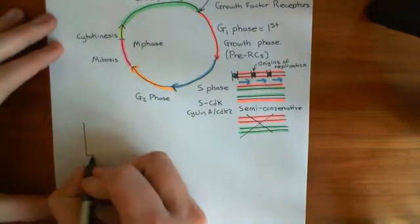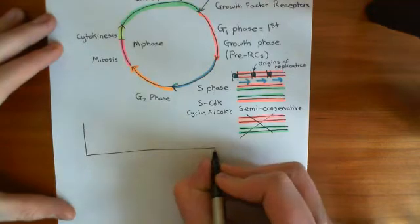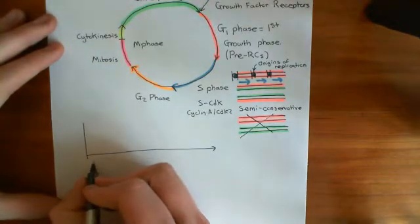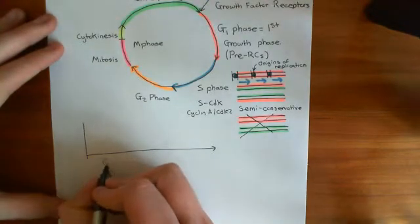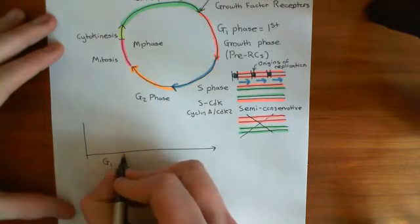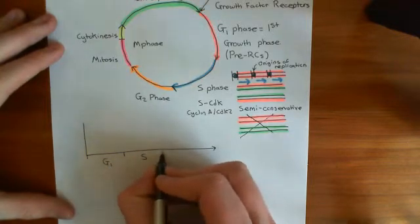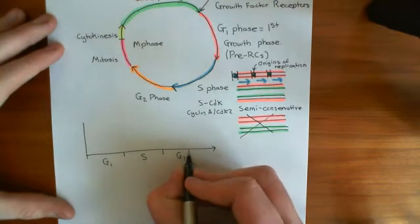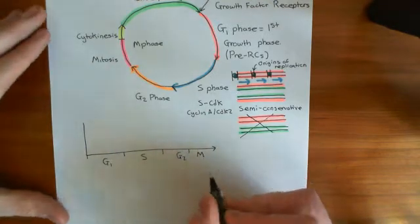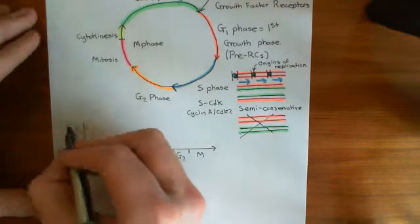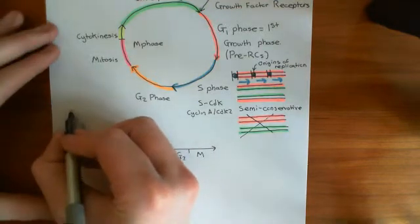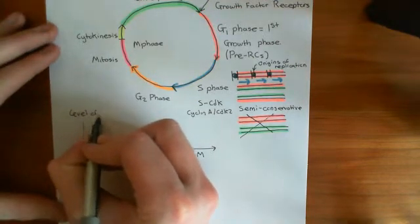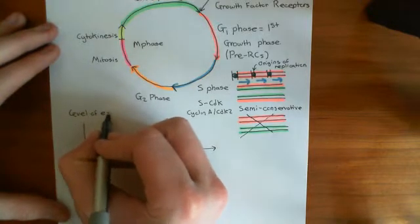If we plot a graph against time, on the x-axis we have time, starting with the G1 phase of the cell cycle, then the S phase, then G2, and M phase is going to be really squashed in on the end. On the y-axis will be the level of activity, or level of expression.